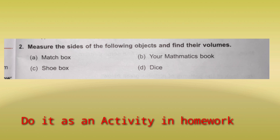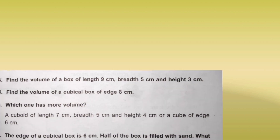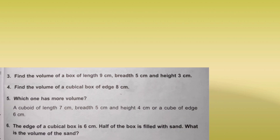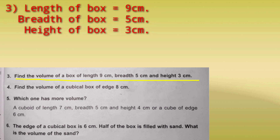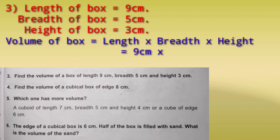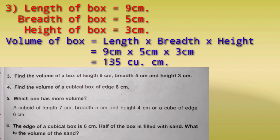Question number 3: find the volume of a box of length 9 cm, breadth 5 cm, and height 3 cm. The volume of a cuboidal box is length x breadth x height. So we do 9 x 5 x 3: 9 x 5 = 45, and 45 x 3 = 135 cubic centimeters.